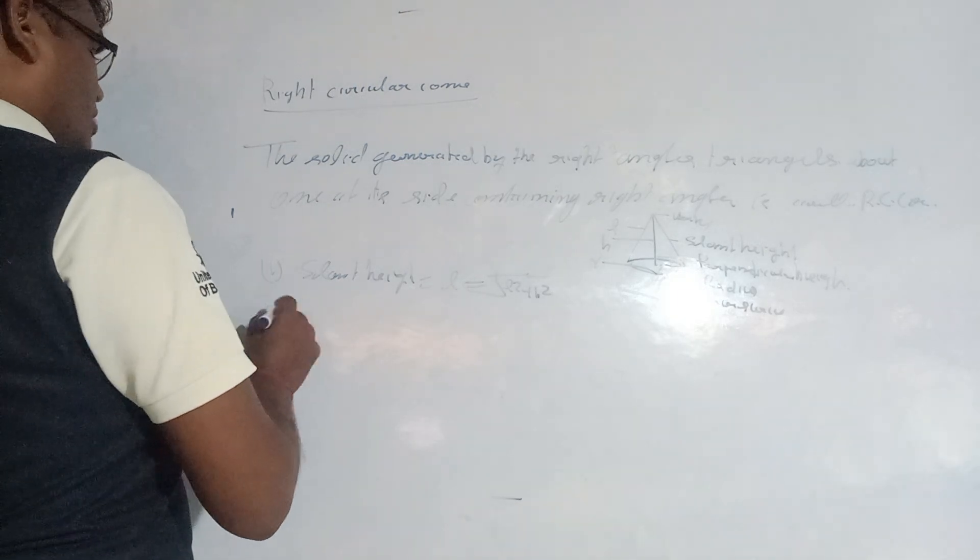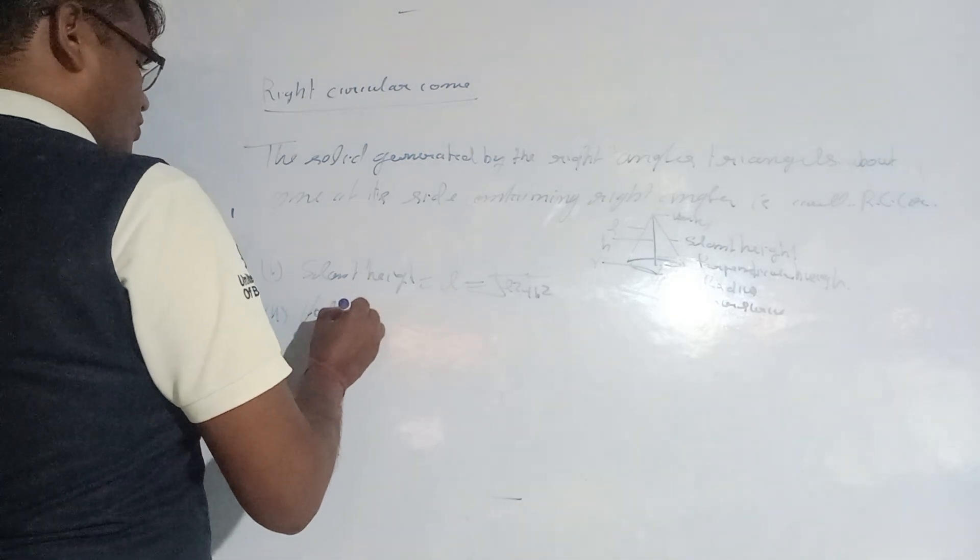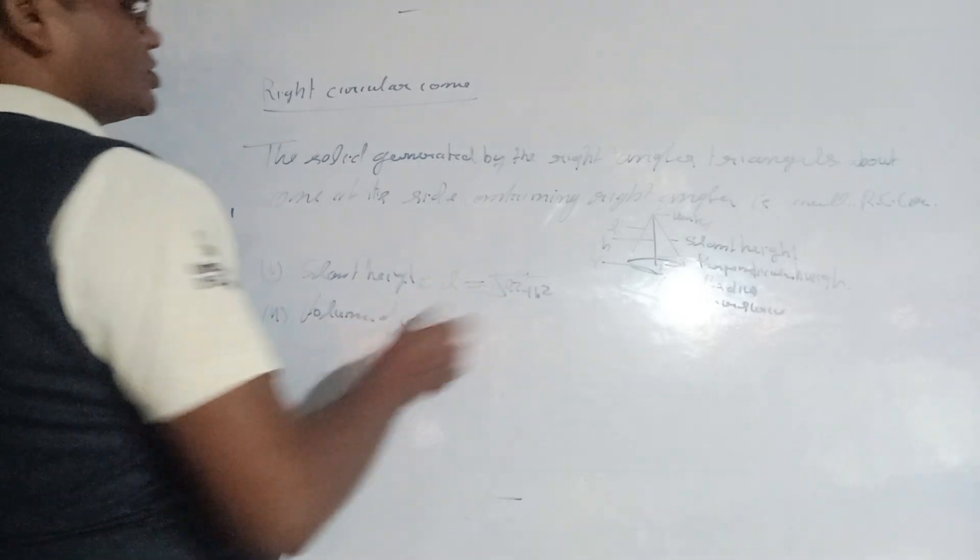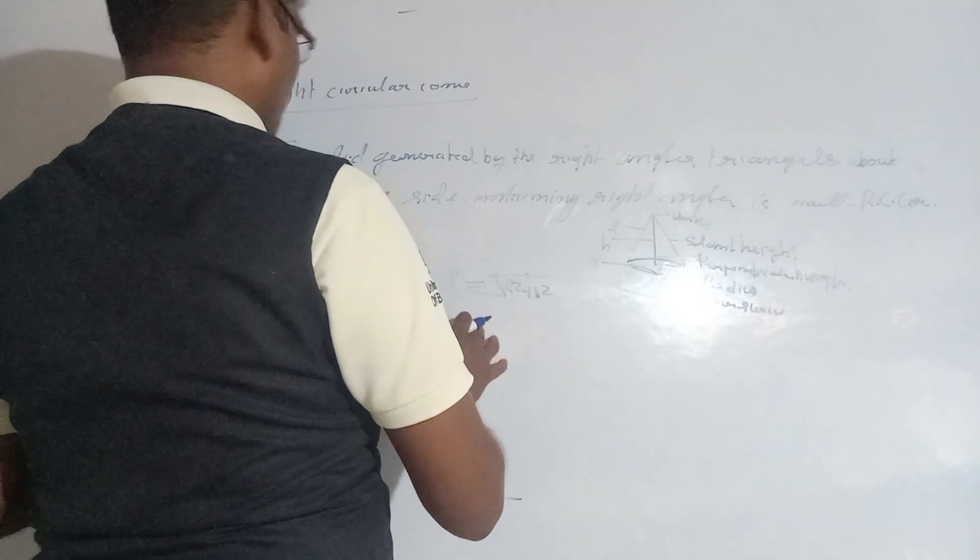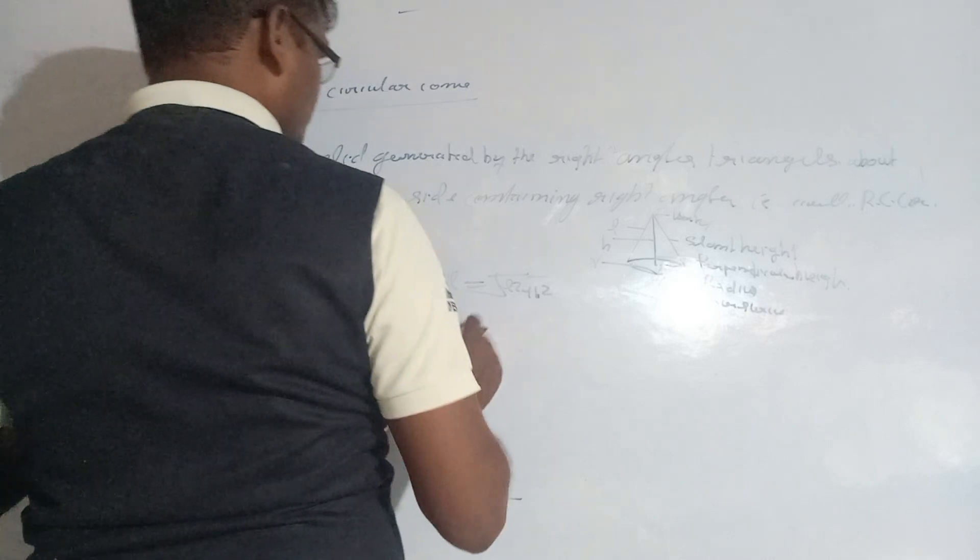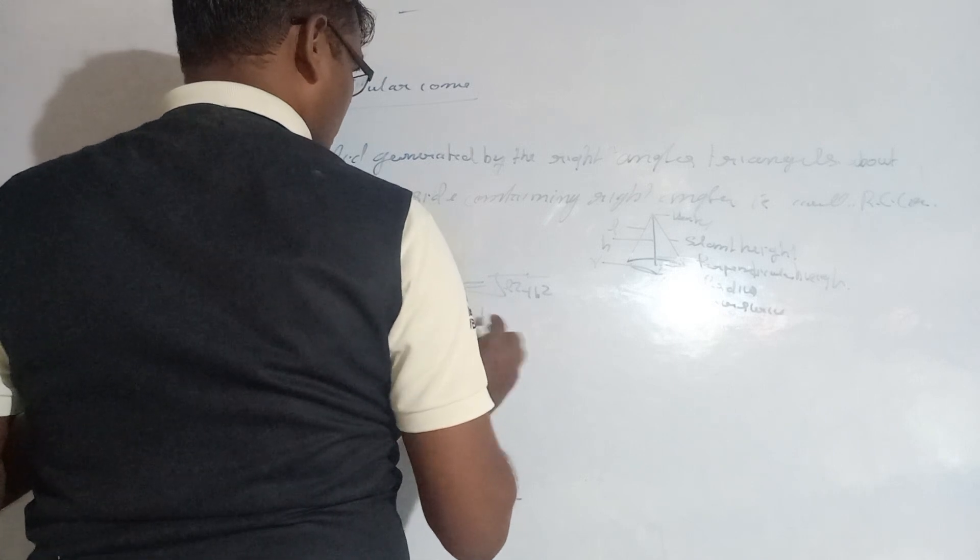The volume of the cone is always 1 by 3, that is one-third πr²h.